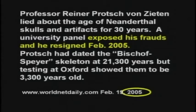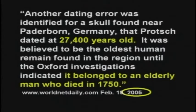So when they publish an article saying they found a dinosaur bone that was 17,221 years old in six months and three days — come on. You don't know that. They're making up this stuff. Professor Rainer Prach resigned in February of 2005 because he'd been lying about carbon dating for years. He had dated the Bischoff spire skeleton at 21,300 years old, but when tested at Oxford they said it's only 3,300 years old — a 700% error. He had also claimed to have found the oldest German, 27,400 years old. Oxford tested it and said this is a man who died in 1750 — he's 250 years old.